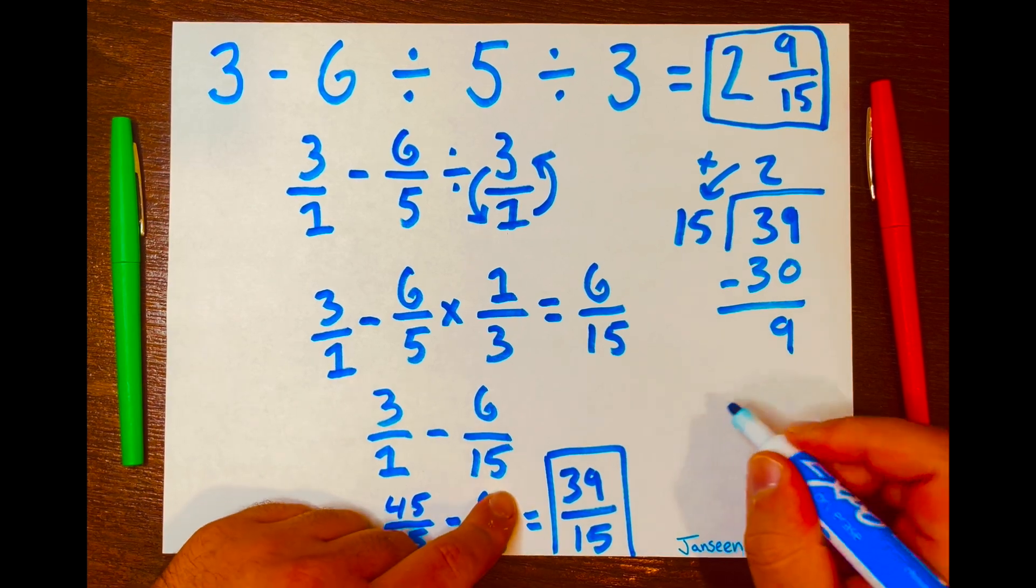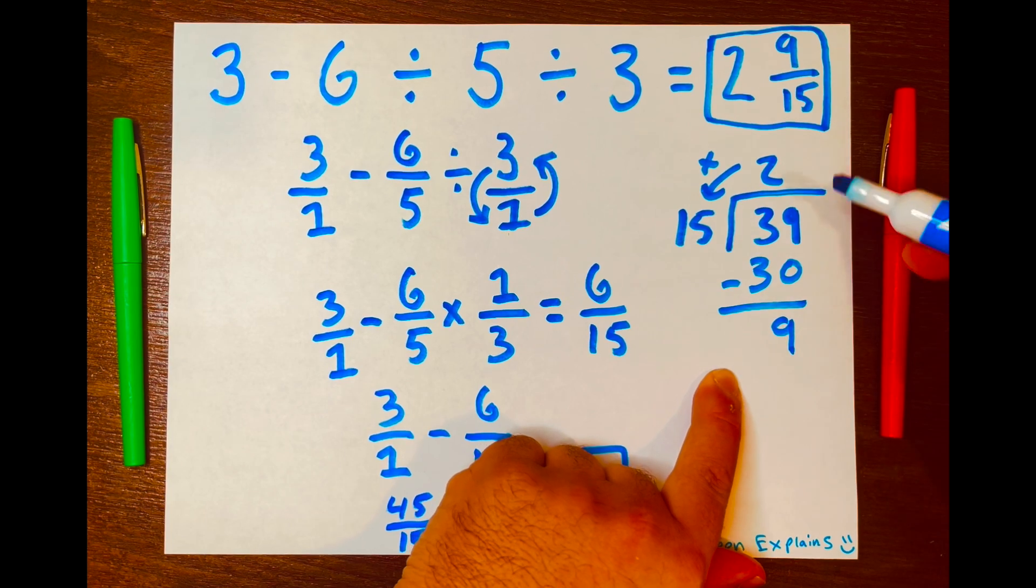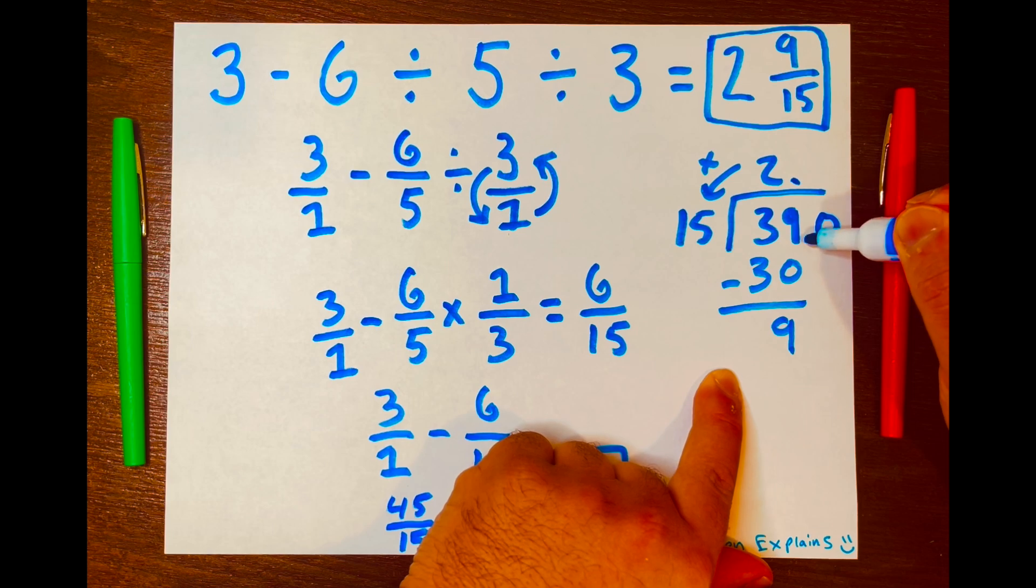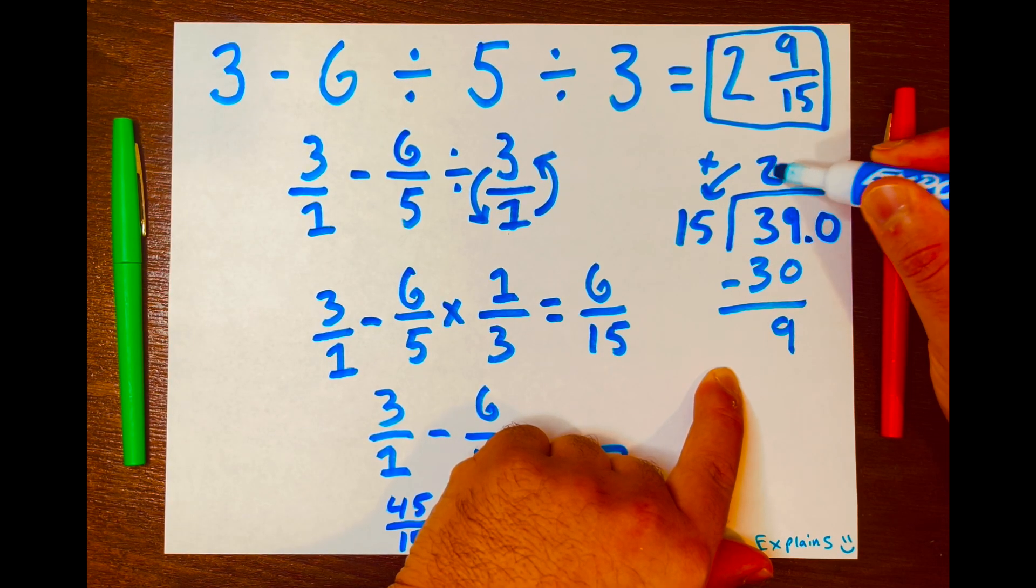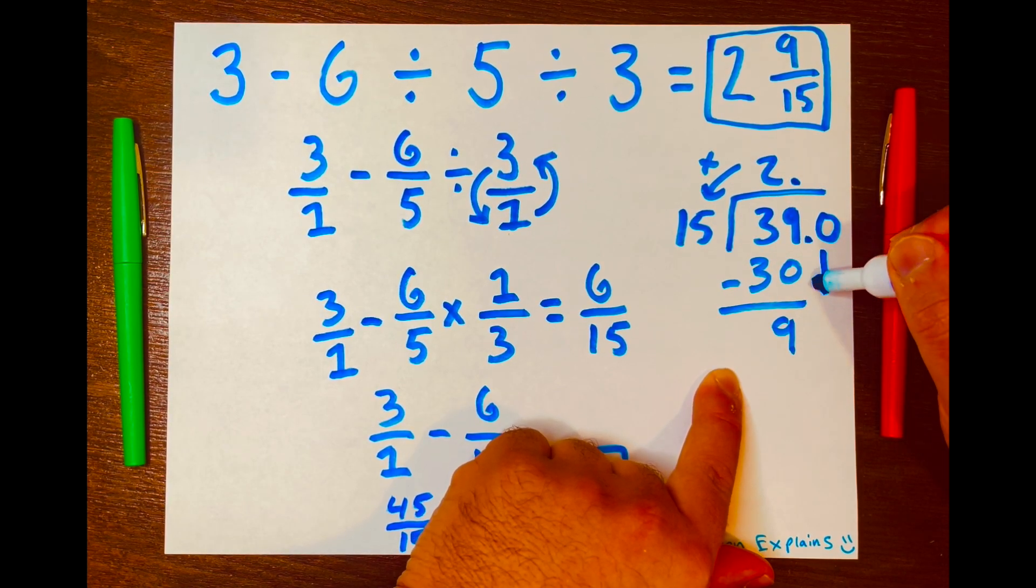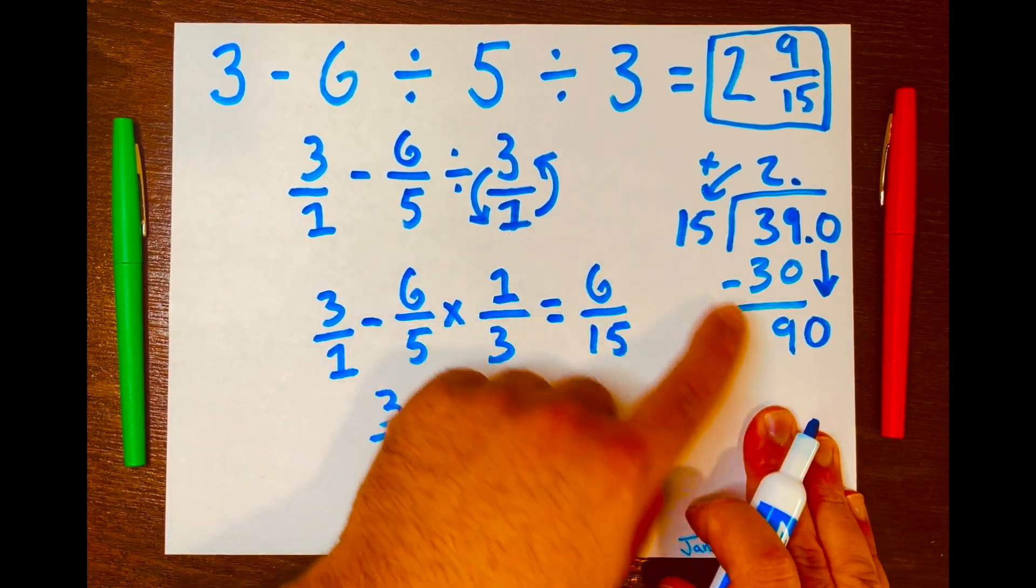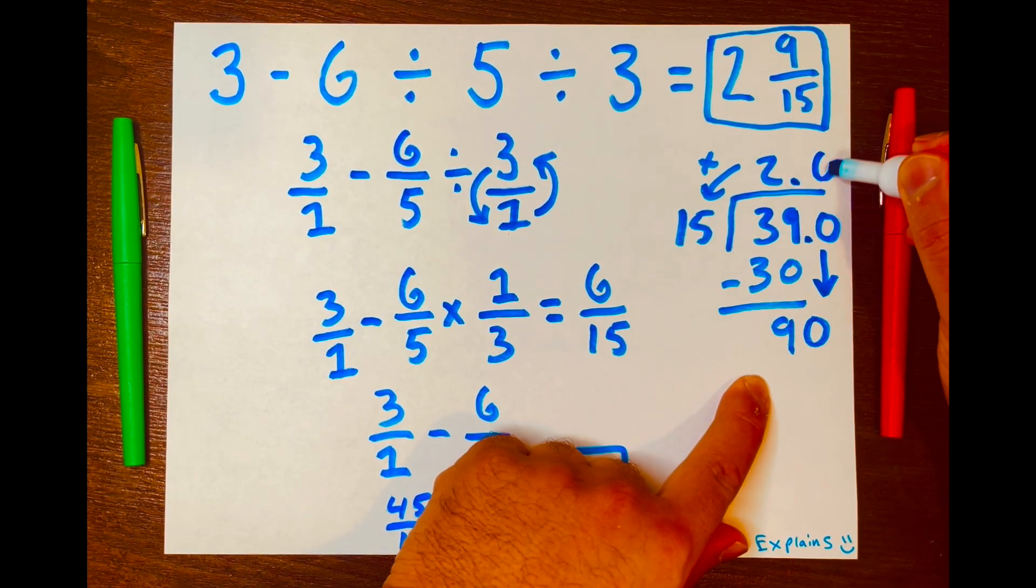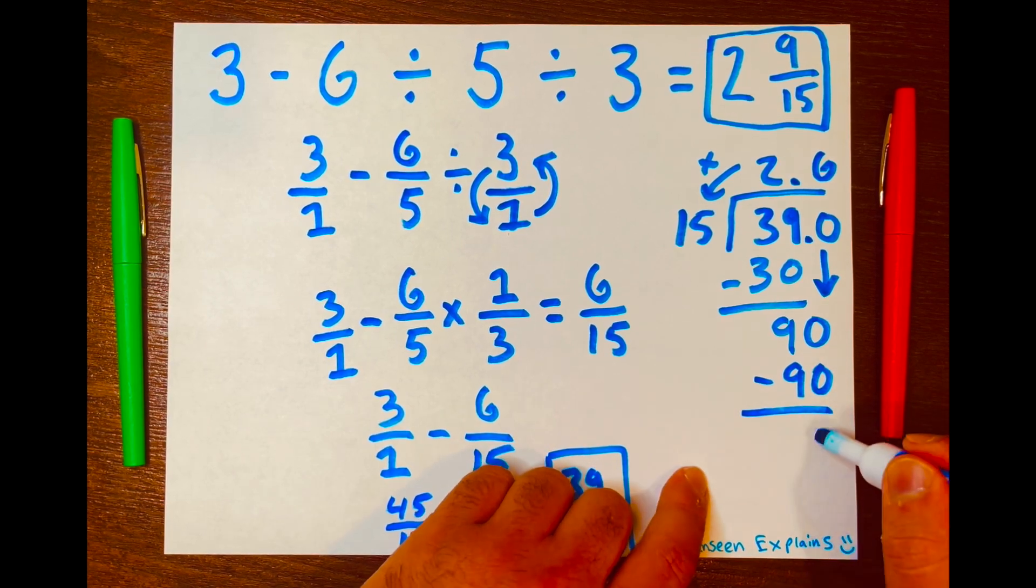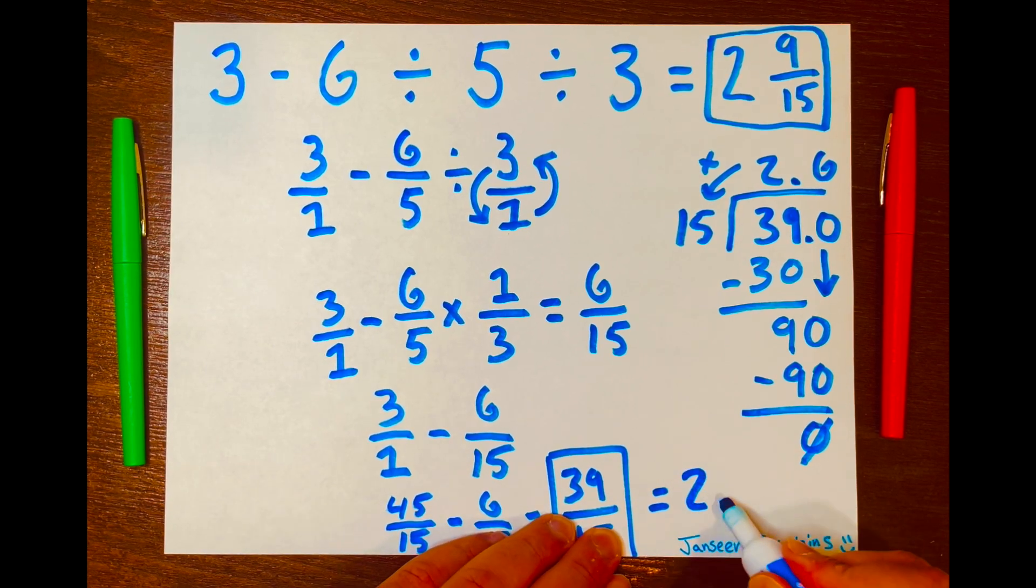And now let's get a decimal answer. So we'll just keep doing the long division. Can 15 fit into 9? You cannot, so you're going to have to borrow a 0. I added a decimal after the 39 and a decimal after the 2 here above the long division symbol. Then we're going to bring this 0 down, and now 9 becomes 90. How many times can 15 fit into 90? 6 times. 6 times 15 equals 90, and 90 minus 90 is 0. So your decimal answer is 2.6.